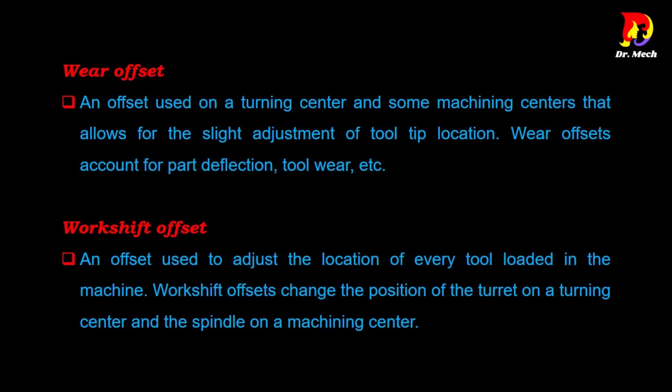A previous video explained about the machine origin — check that video if you want to know more. With work shift offset, all tools move simultaneously with the turret or main spindle from the machine origin, reducing the initial travel distance from the turret to the workpiece. For example, if one product cycle time is 5 minutes, using work shift offset can reduce it to less than 5 minutes. This offset is especially useful when working with smaller workpieces.